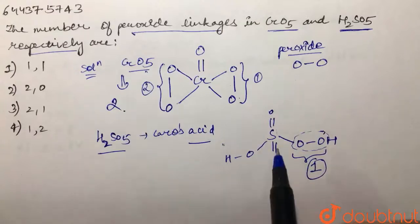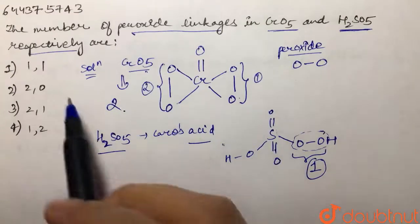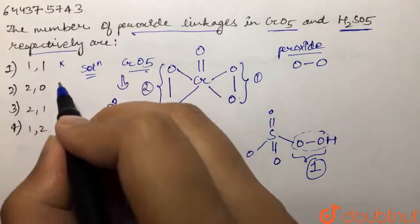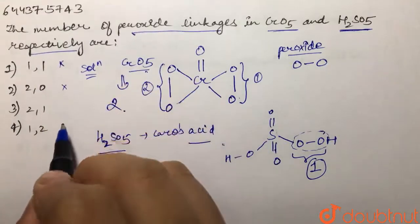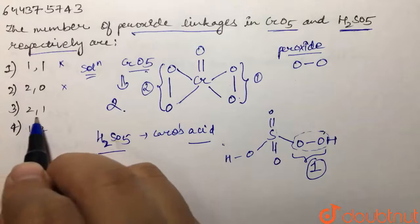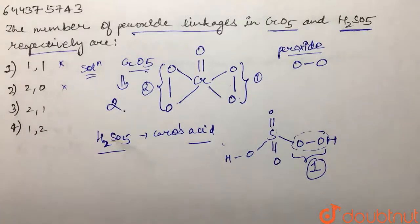So our answer is 2 and 1. If we look at our options: 1 and 1, we have not got 1 and 1; 2 and 0, we have not got 2 and 0; 2 and 1, we have got 2 and 1 respectively. So our answer to this question is 3rd.